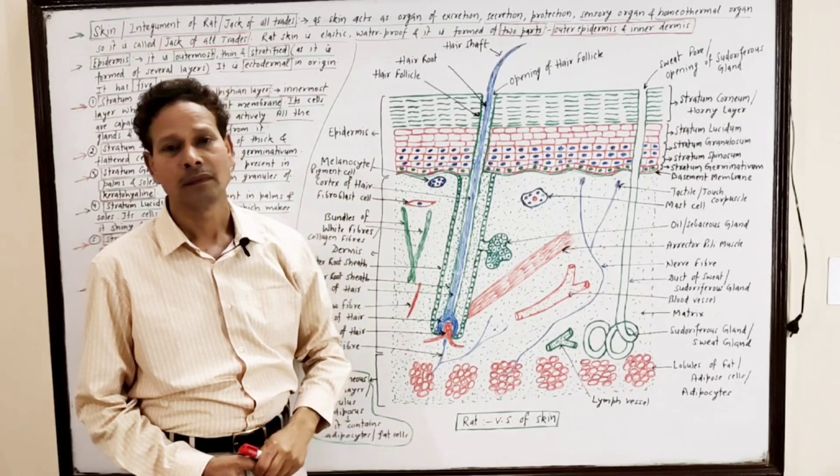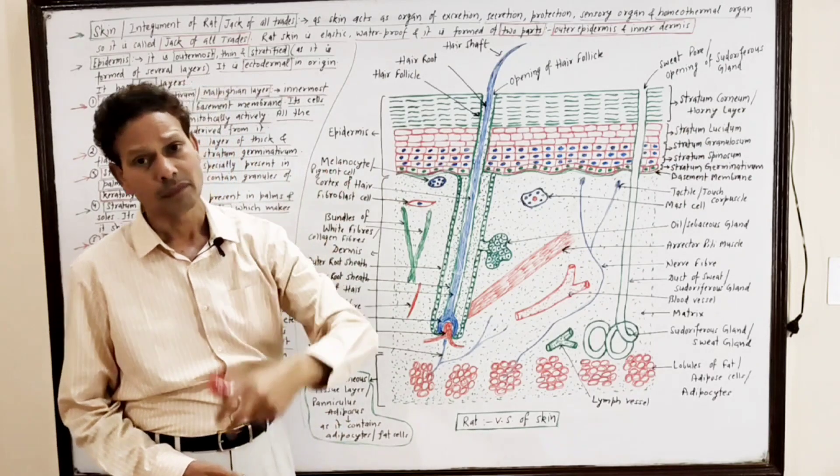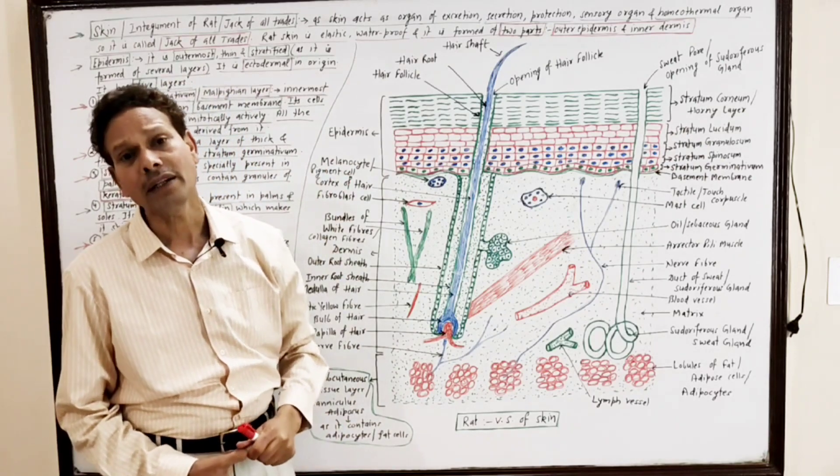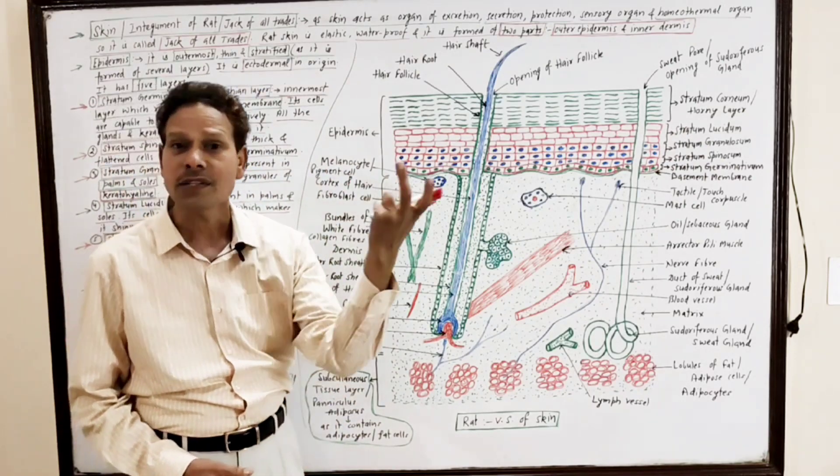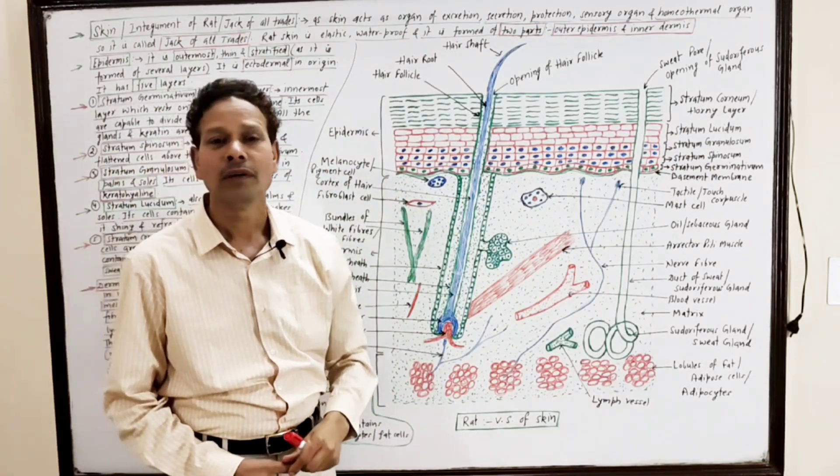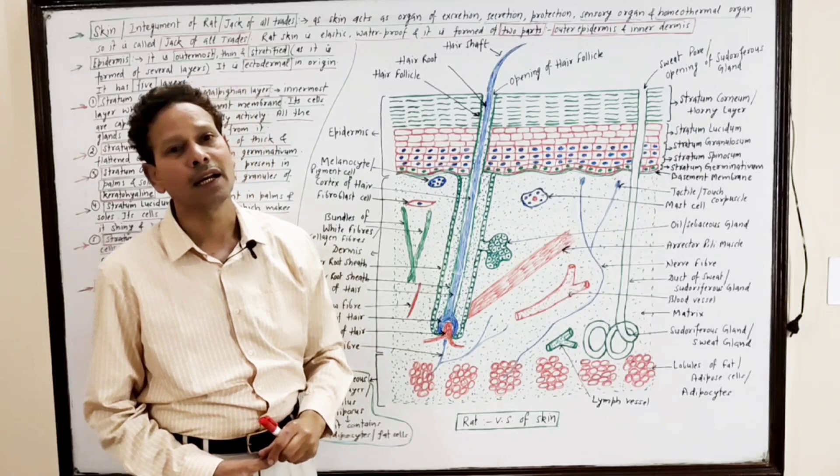Next layer, just above the stratum germinativum, is the stratum spinosum. It is a thick layer which consists of flattened cells.